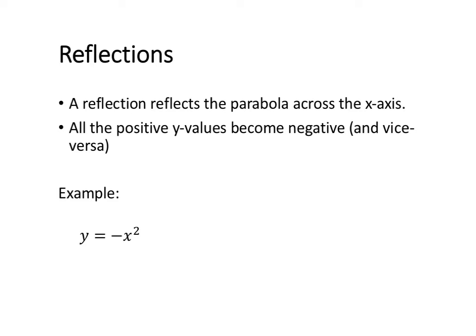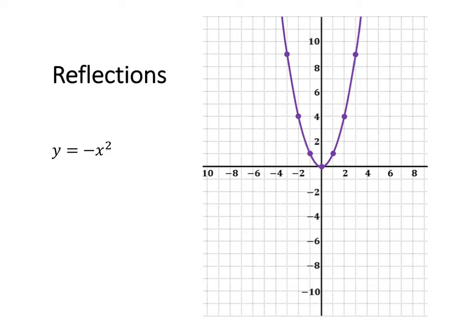In this example, we want to sketch the parabola y equals negative x squared. We've already got on our Cartesian plane the parabola y equals x squared. To complete our y equals negative x squared graph, we want to reflect it across the x-axis.